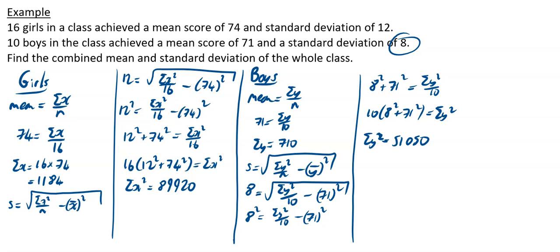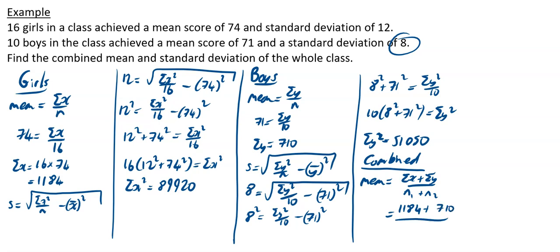We now have sigma y and sigma y squared for the boys. For the combined set, the combined mean equals sigma x plus sigma y, divided by n1 plus n2. That gives us 1184 plus 710, divided by 16 plus 10. Filing that into the calculator gives a combined mean of 72.85 to 2 decimal places.